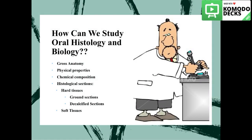So how are we going to study oral histology together this semester? First we will talk briefly about the gross anatomy of each tissue and its location. Then we will discuss the physical properties of these tissues. For example, the hard tissues of a tooth have different physical properties — the enamel is different than dentine, which is different than cementum. This means when we restore these tissues in our work as dentists, we should use materials that exhibit as much as possible the same properties of each tissue. Then we will talk about the chemical composition of these tissues, and then we will discuss the histological sections.